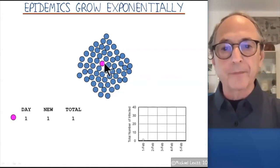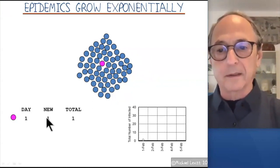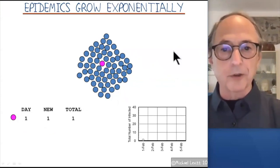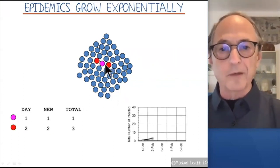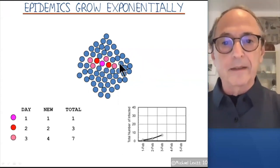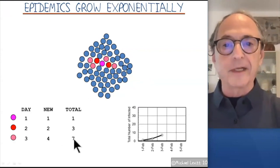So we start the infection. This person is the first case. On day one, we have one new case and one total case. And here we're plotting what the results are going to look like. On day two, this one person has infected two people and that's it. Then on the next day, these two each infect two. So now we're up to four new cases and seven in total.